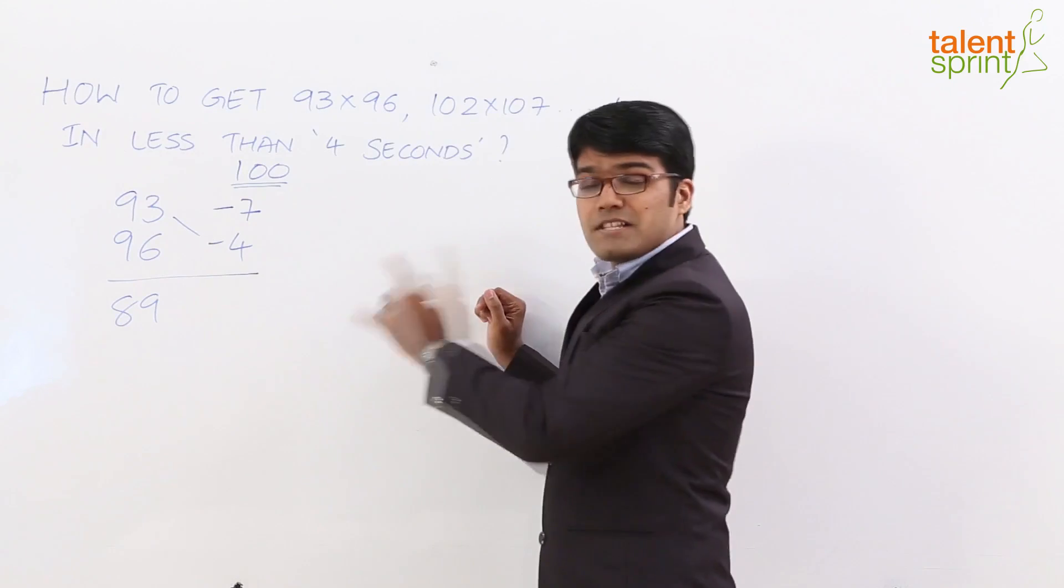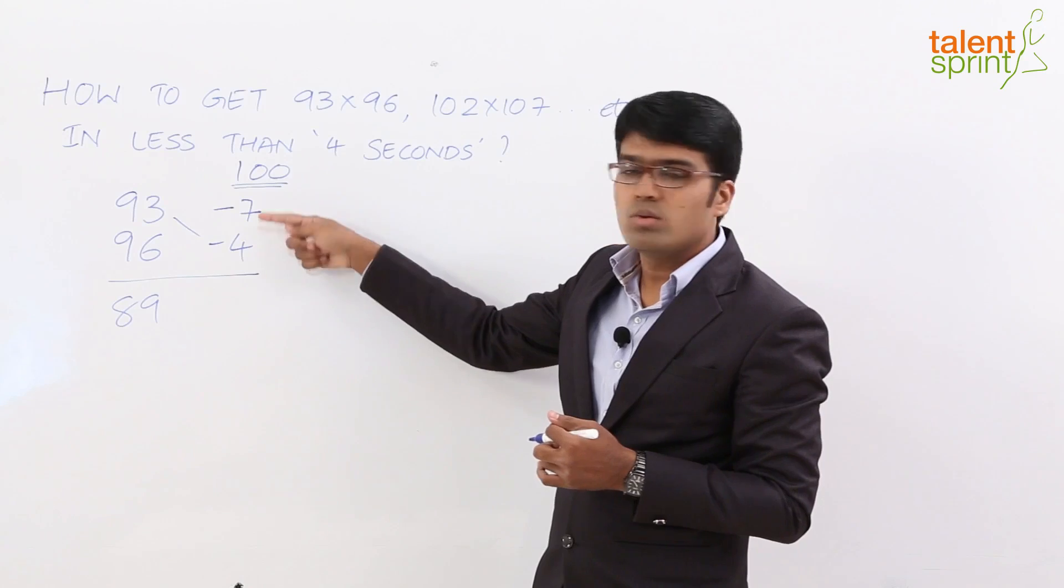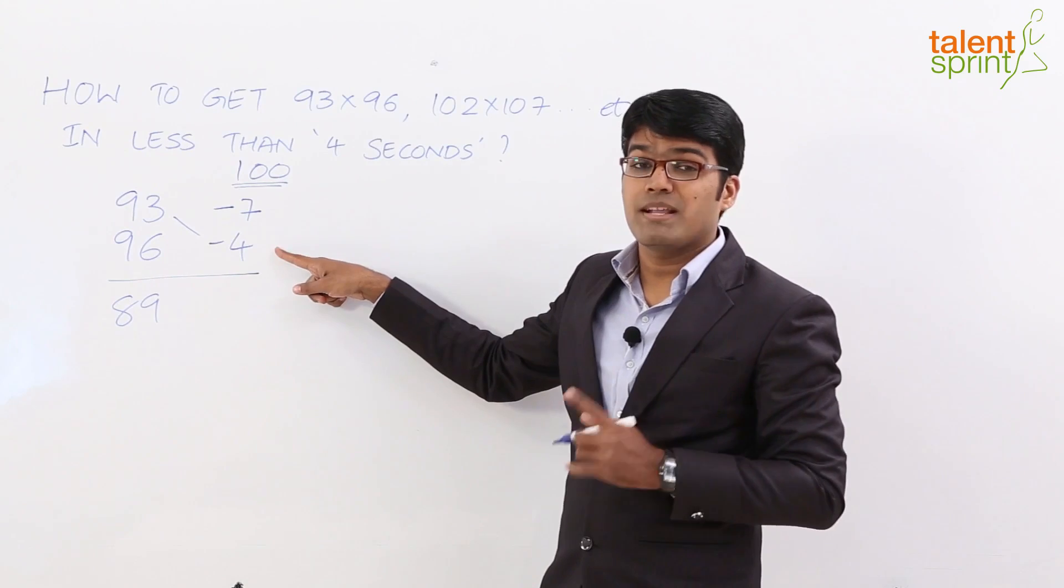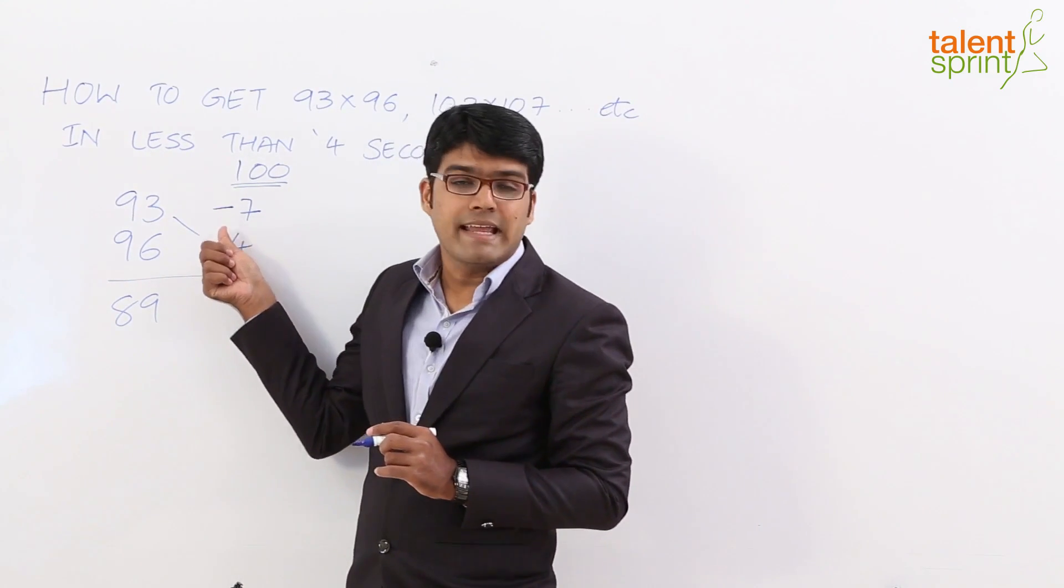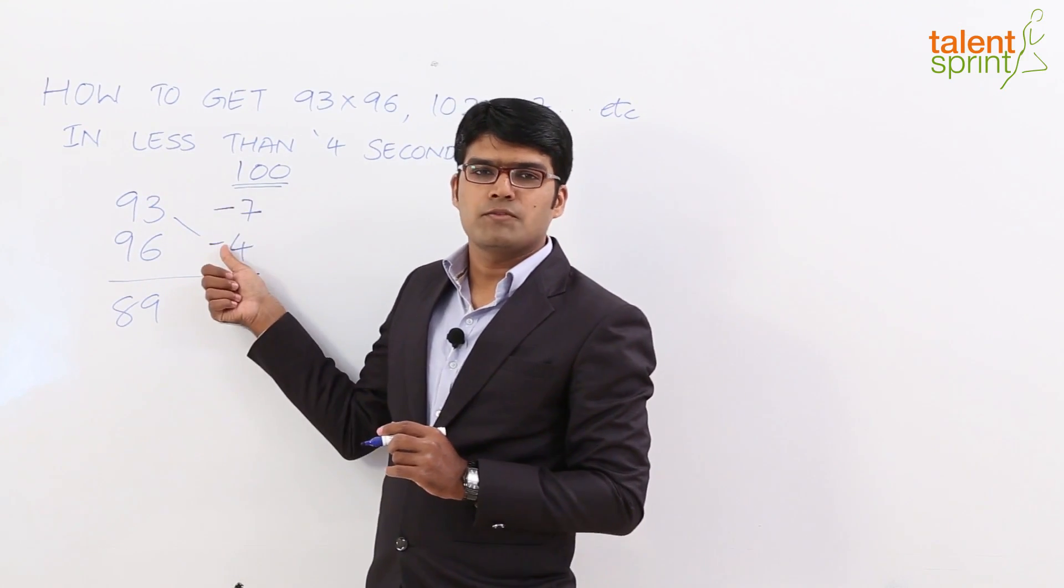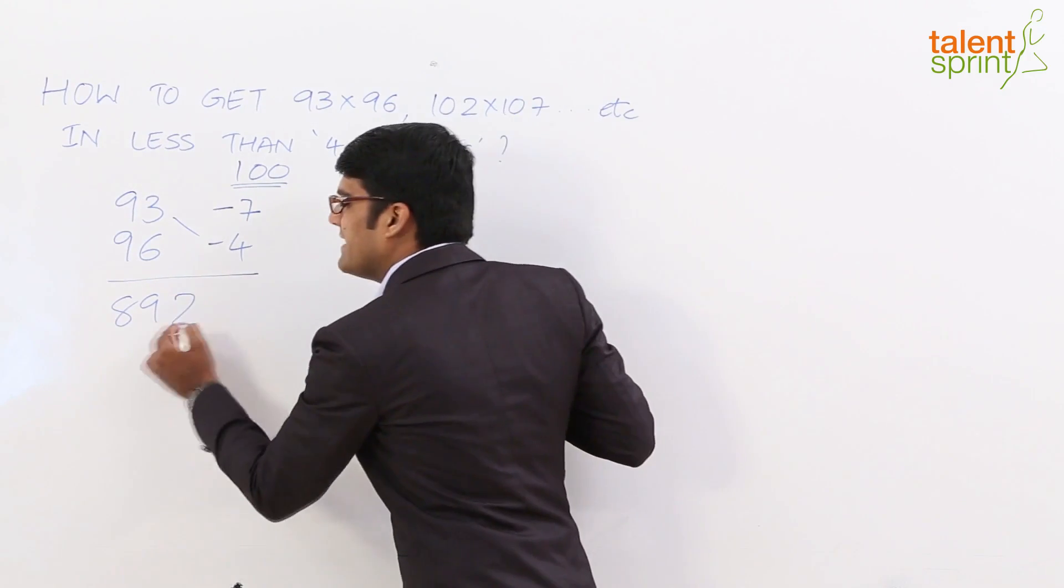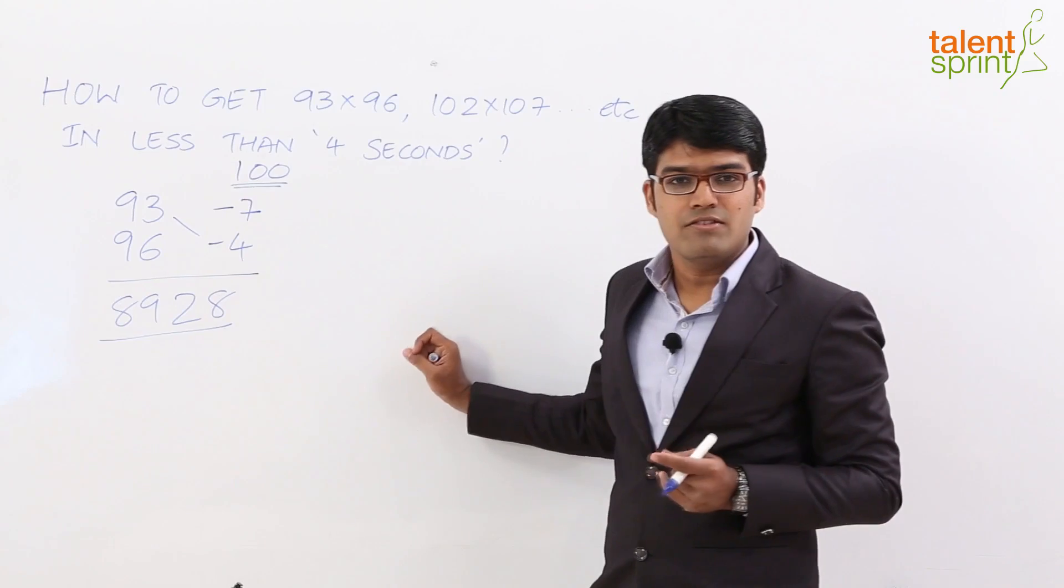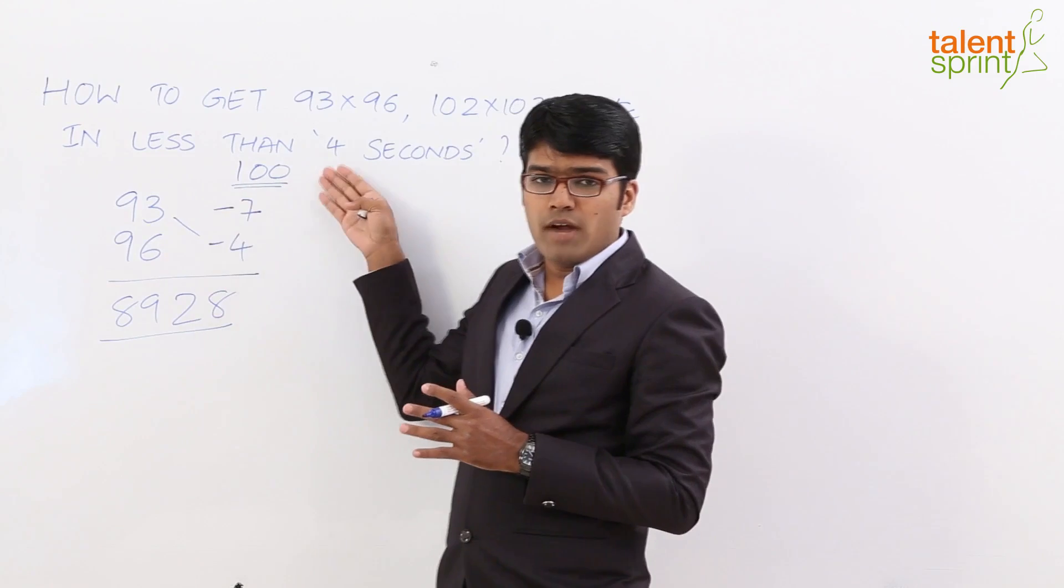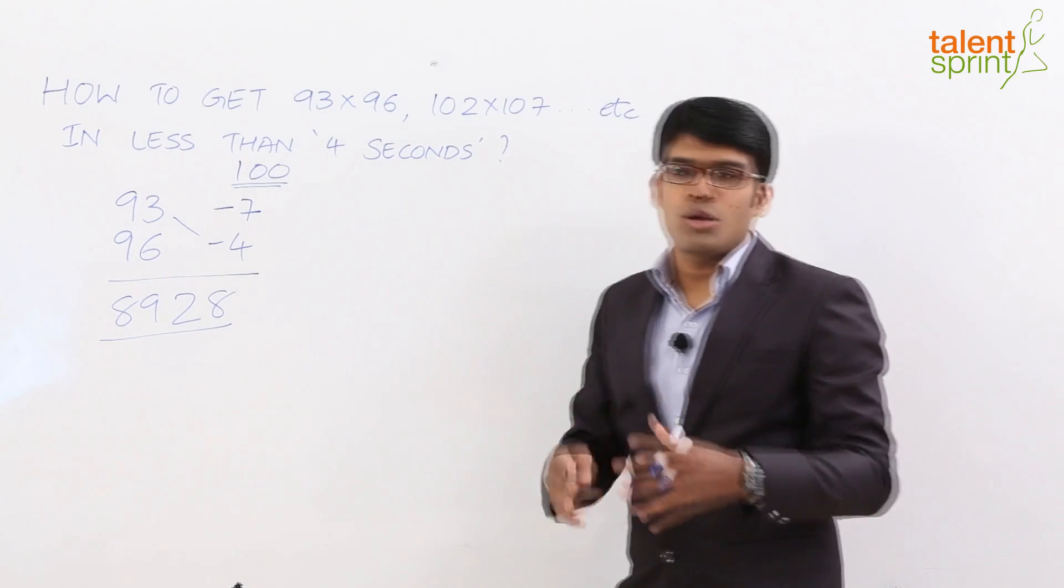Now this is the first part of the answer, 89. How do we get the remaining part of the answer here? Just multiply the 2 values that we have got here. For example, minus 7 into minus 4 is plus 28. Remember, you also need to consider the sign here when you go for multiplication. It is not just 7 into 4. It is minus 7 into minus 4. Minus 7 into minus 4 is plus 28. So we just append 28 here and that gives us the final answer 8928. So this is how just by taking the distance of the given numbers with respect to 100 and the cross difference, you can easily get the product of the numbers without having to write much on paper.